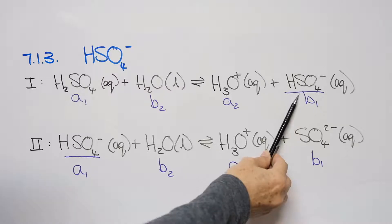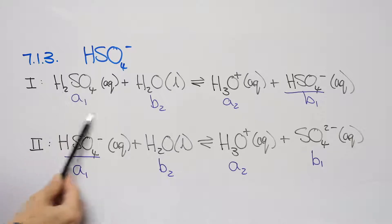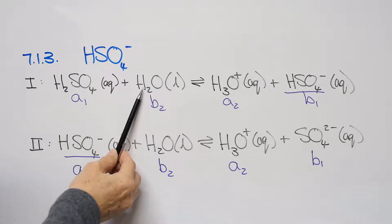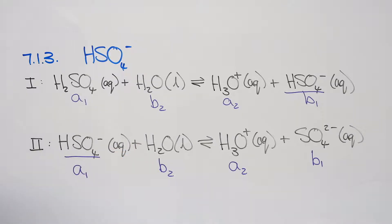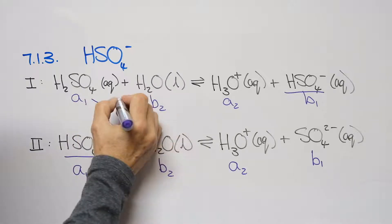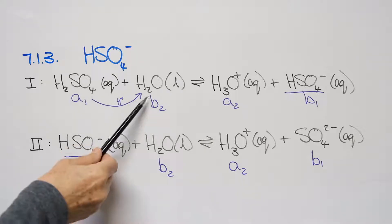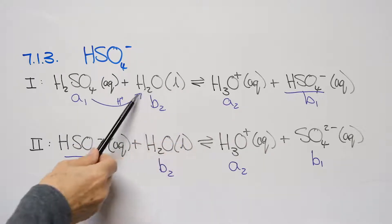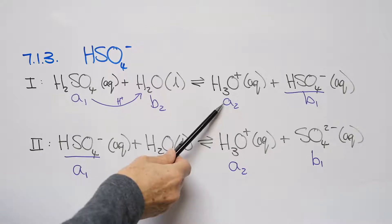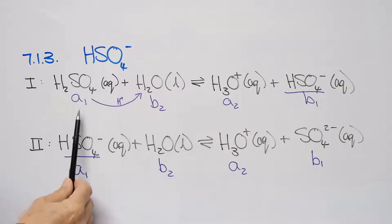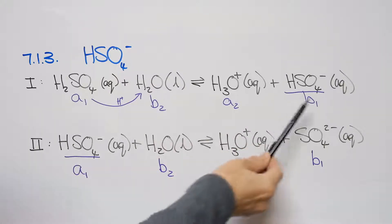When sulfuric acid donates its proton, the hydrogen sulfate ion forms — that is the conjugate base, acid one and base one. The hydrogen goes to the water molecule; the water molecule is accepting the hydrogen ion, so it's acting as a base. The water then forms the hydronium ion when it takes the hydrogen ion from the sulfuric acid. So water accepts a proton — it's a base — and the hydronium ion is its conjugate acid. On each side we have an acid and a base, always a pair one and a pair two.